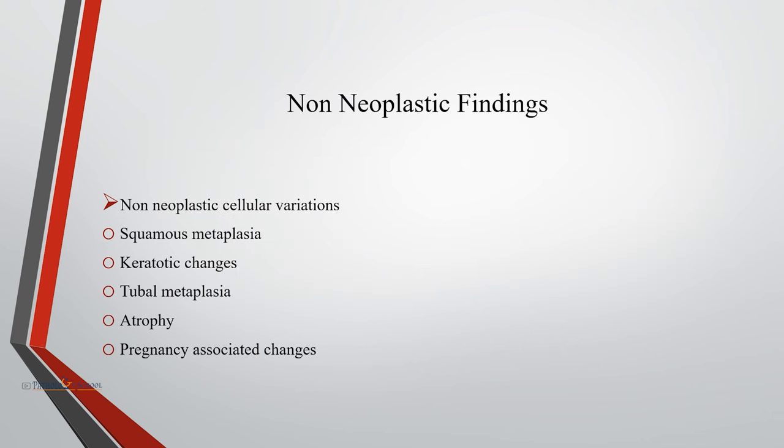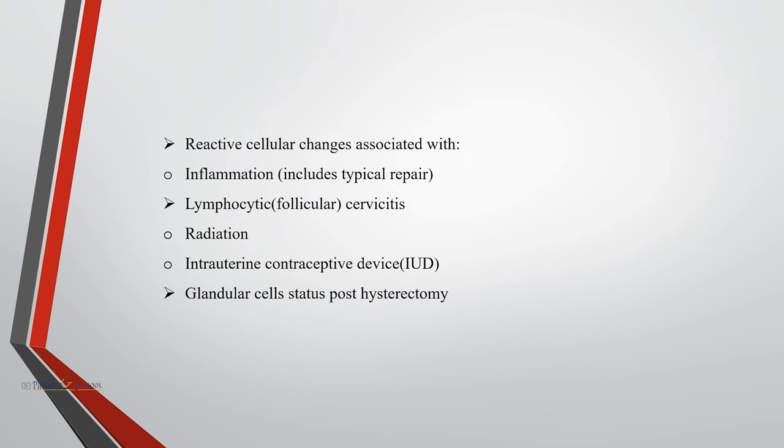We will now discuss some non-neoplastic findings seen along with the normal cellular elements. These include squamous metaplasia, keratotic changes, tubal metaplasia, atrophy, pregnancy-associated changes, reactive cell changes associated with inflammation, radiation, intrauterine contraceptive device, glandular cell status post-hysterectomy.